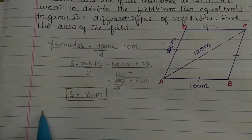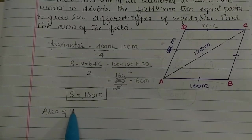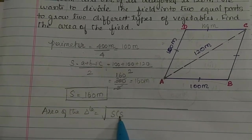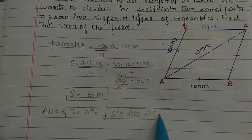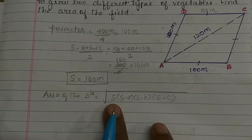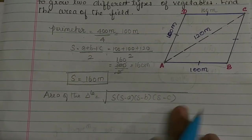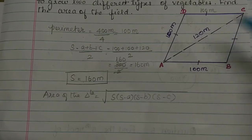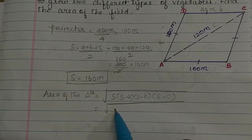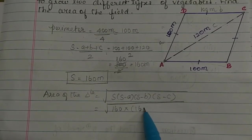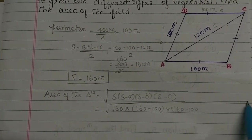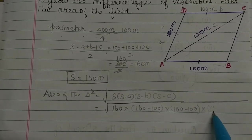Now we have the area of the triangle using Heron's formula: root of s into (s minus a) into (s minus b) into (s minus c). Here a is 100, b is 100, and c is 120. So this equals root of 160 into (160 minus 100) into (160 minus 100) into (160 minus 120).